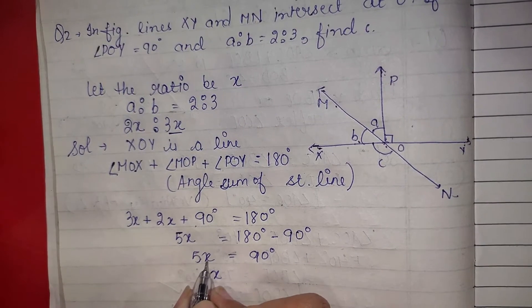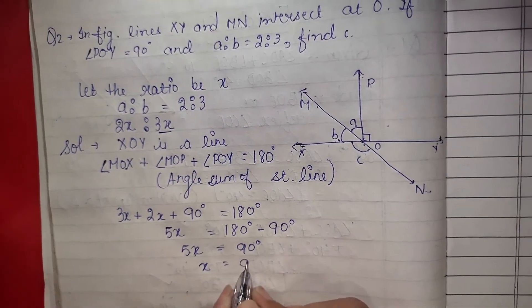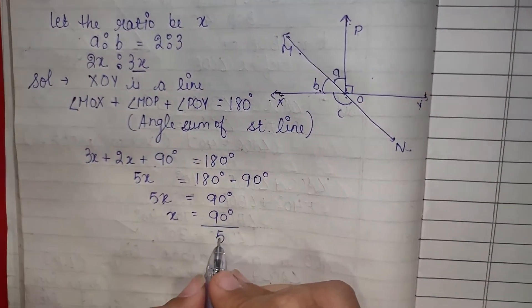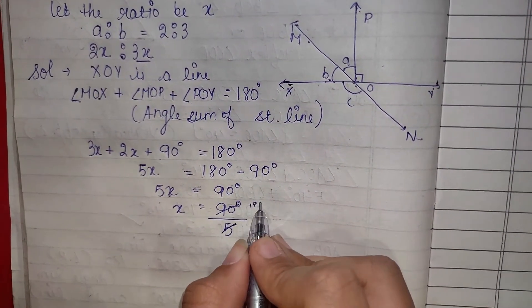X को हम यहीं छोड़ देंगे, 5 इससे multiply हो रहा है तो यहां जाकर divide हो जाएगा। हम divide करेंगे तो आएगा 18.